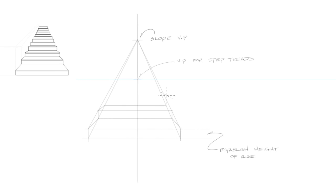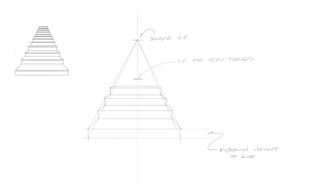We will repeat this process for the other steps. Notice that as we get closer to the horizon line, the view of the top of each step decreases. And when we pass the horizon line, we no longer see the tops of the steps.